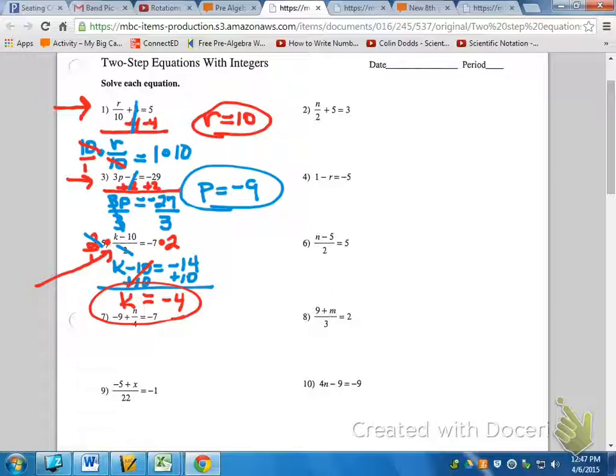you add or subtract first, multiply or divide last. If you have one like number 5, you have to get rid of that denominator first, so you would multiply before you did anything else. Are there any questions?